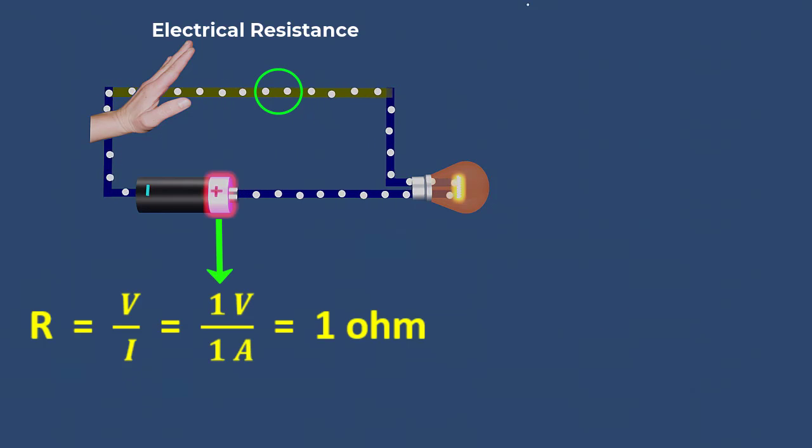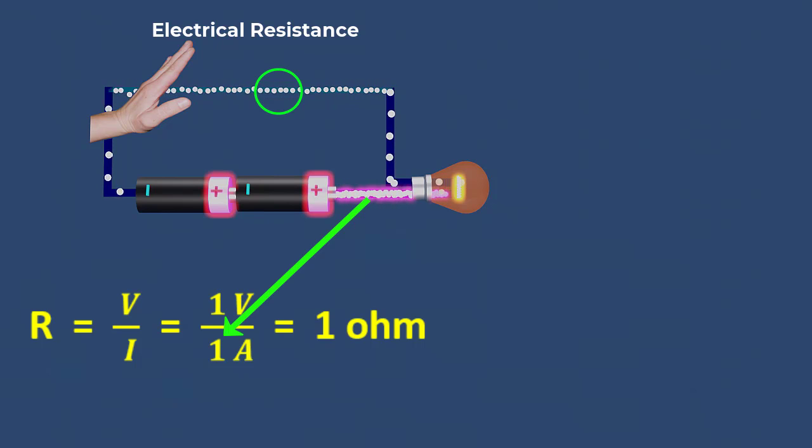A material that requires one volt to allow one ampere of current has a resistance of one ohm. A material that requires more voltage to allow one ampere of current has a high value of resistance. The higher the resistance, the less current will flow through the material.